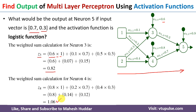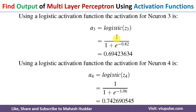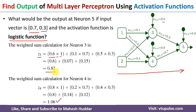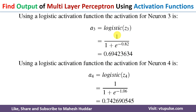Similarly, we calculate the weighted sum at neuron 4, which is equal to 1.06. Now we need to apply the logistic activation function, which is given by 1 divided by 1 plus e raised to −z. For neuron 3, z3 = 0.82, so the output a3 = 1 / (1 + e^−0.82) = 0.6942. For neuron 4, a4 = 1 / (1 + e^−1.06) = 0.7426.